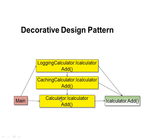We are going to create a concrete class that implements iCalculator — let's call it Calculator. Under normal circumstances, we will create an instance of the Calculator class in our main application, pass in two parameters to the add method, and the add method will add the two parameters and return the result back to main.